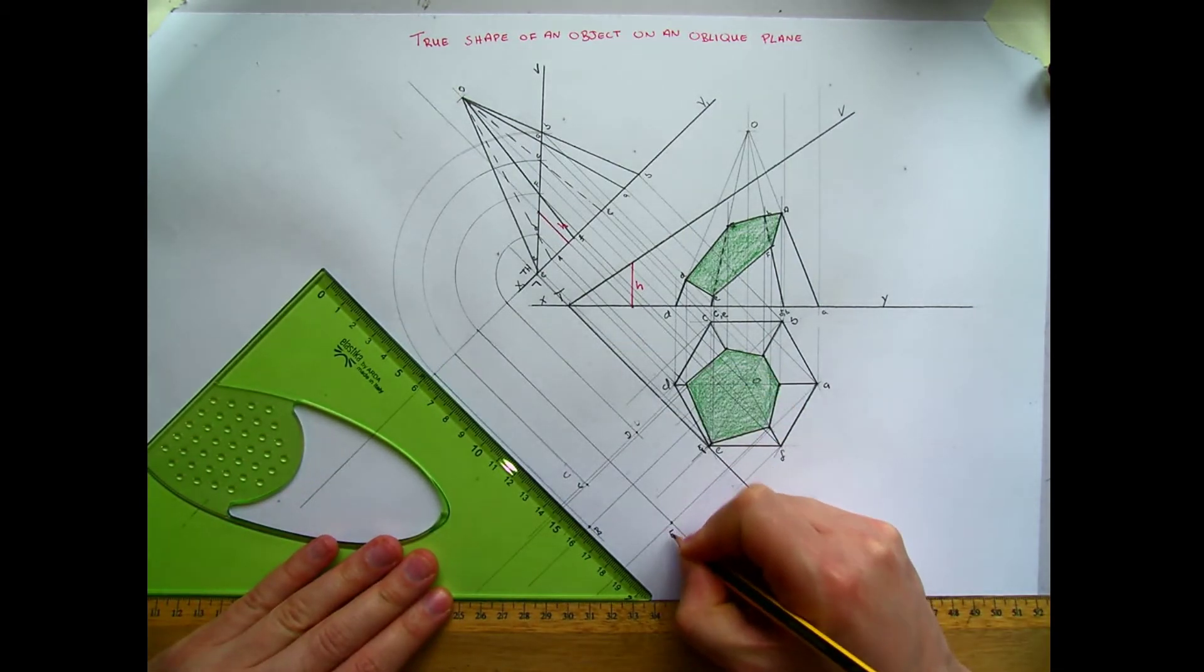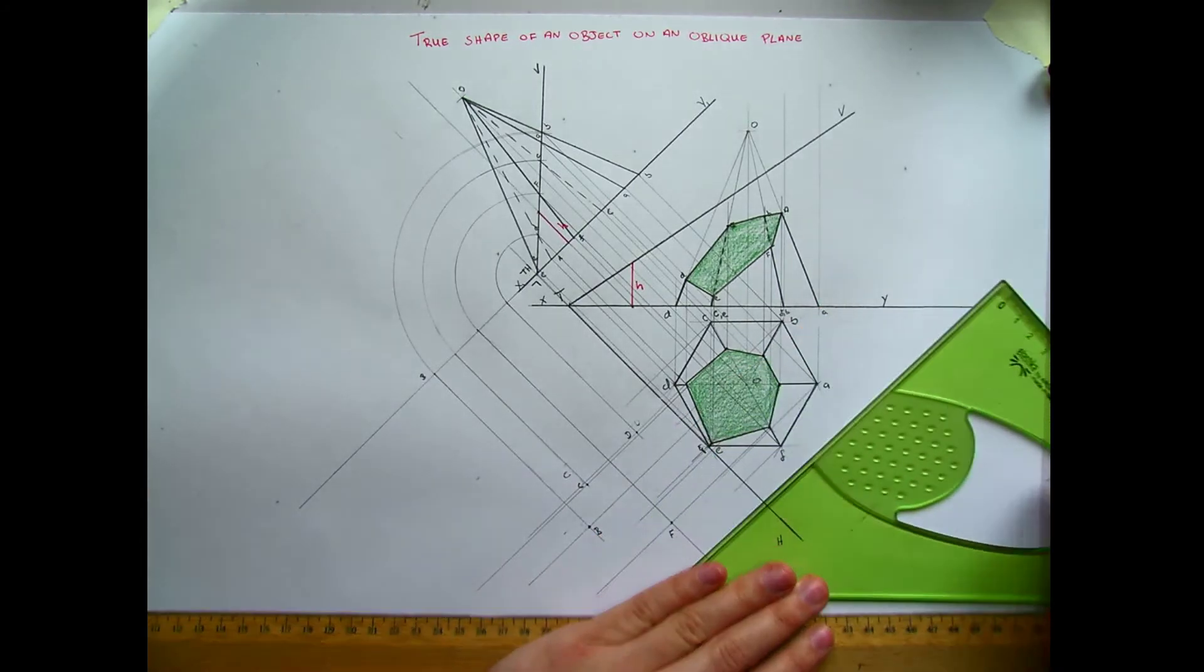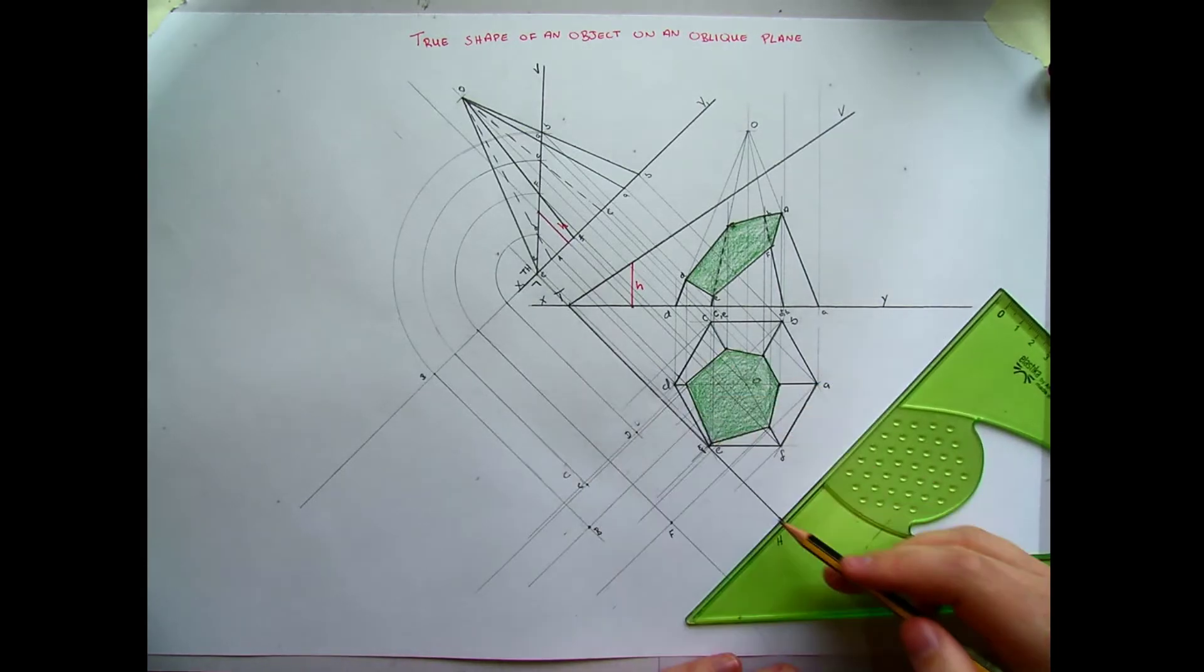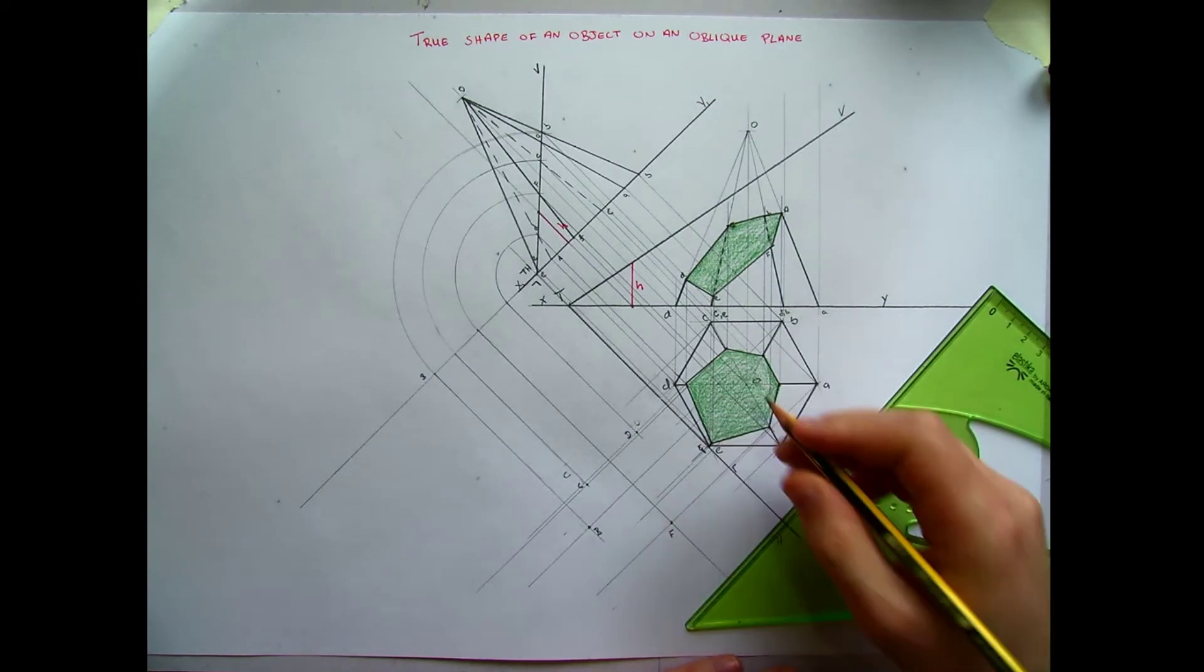This is f and finally a. So just a recap with point a. Each point is going to be taken from where it is in the plan perpendicular to the horizontal trace. So each of these points here is perpendicular to the trace.